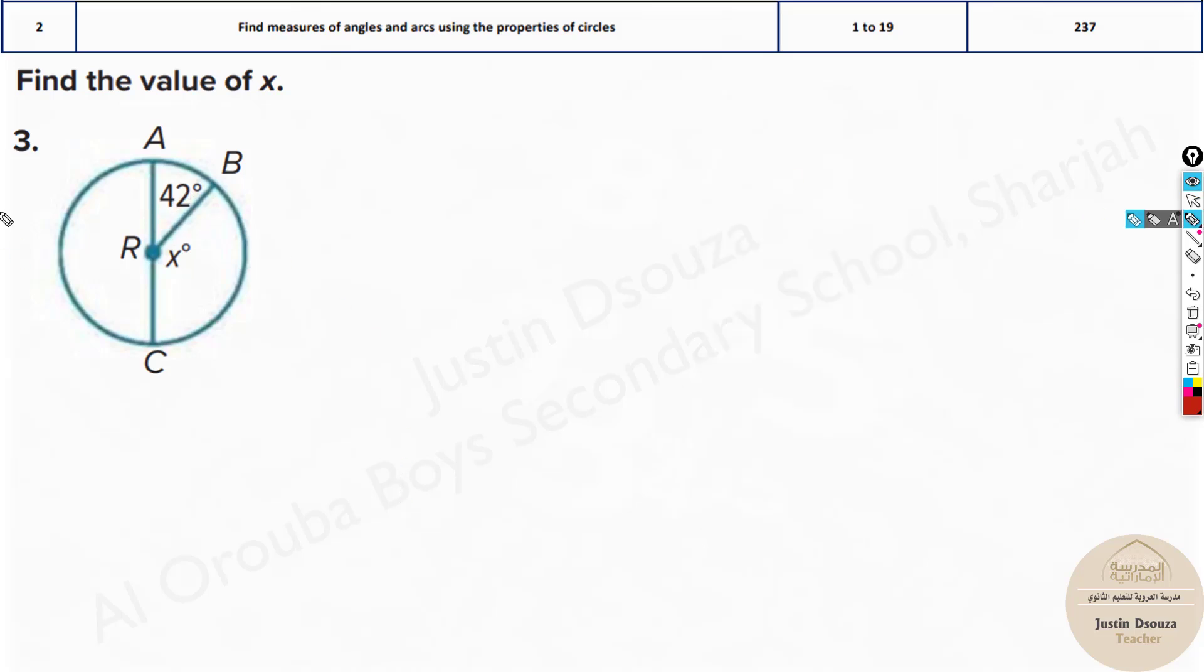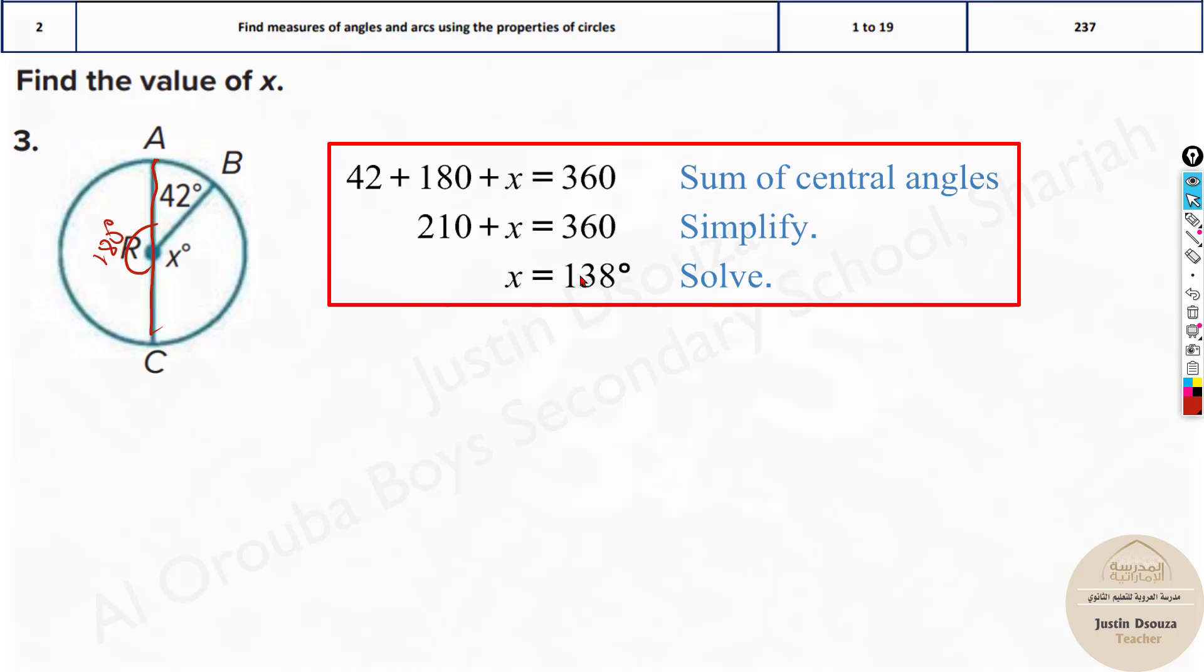Here we have been given 42 and we have no clue what is x on the other side. But if you see this is the diameter, they generally mention this, so this AC line is the diameter, so this is 180 degrees. You know 180 plus 42 is 222, you just do 360 minus that and you'll get the answer. You can see over here that's the answer.